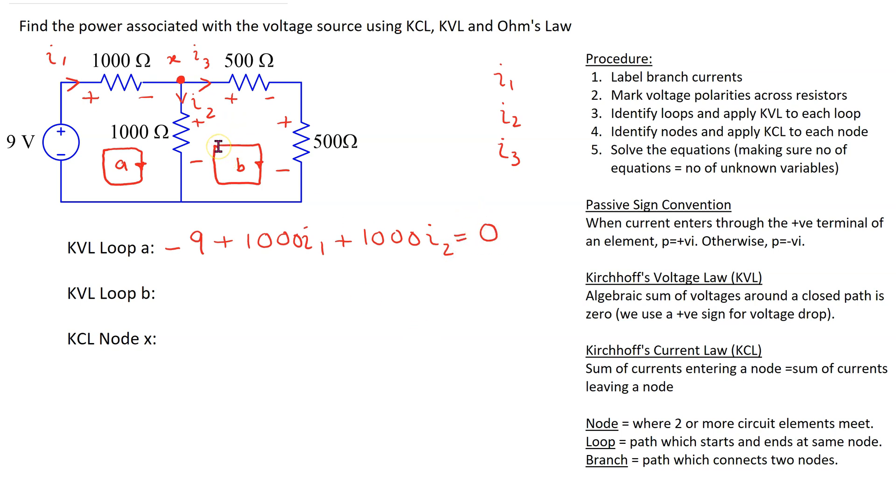Next we apply KVL to loop B. We can start here. We can see that we are going from plus to minus. So this is a voltage drop and this is written with a positive sign. So this is 500 I3. Next we are going again from plus to minus. So this is a voltage drop. So this is given by 500 I3.